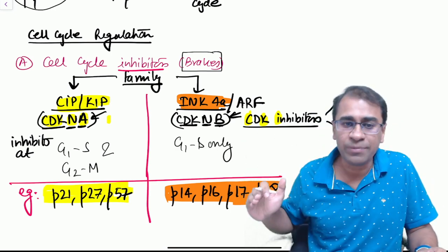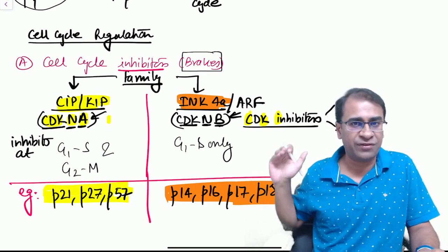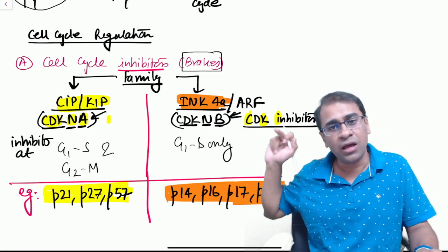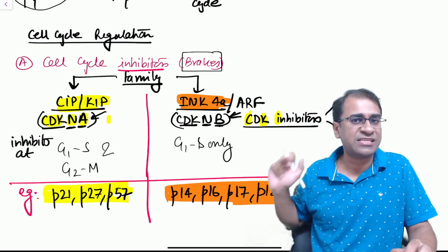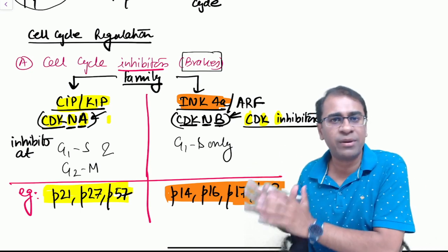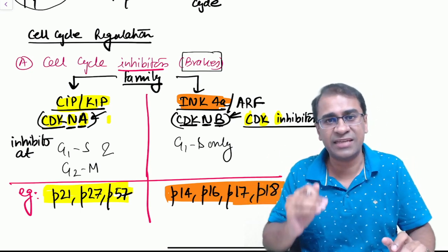Examples of the CIP/KIP are p21, 27, 57. Examples of the INK4 are p14 and p16 most importantly. Other examples are p17 and p18. These are the cell cycle inhibitors.